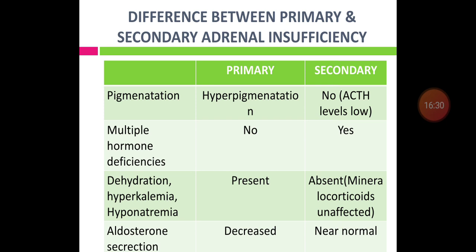Differences between primary and secondary adrenal insufficiency: hyperpigmentation is seen in primary (Addison's disease), but absent in secondary because ACTH levels are very low. Multiple hormone deficiencies are usually seen in secondary but not in primary. Dehydration, hyperkalemia, and hyponatremia due to mineralocorticoid deficiency are seen in primary; absent in secondary because mineralocorticoids are unaffected. Aldosterone secretion is decreased in primary but normal or near normal in secondary.